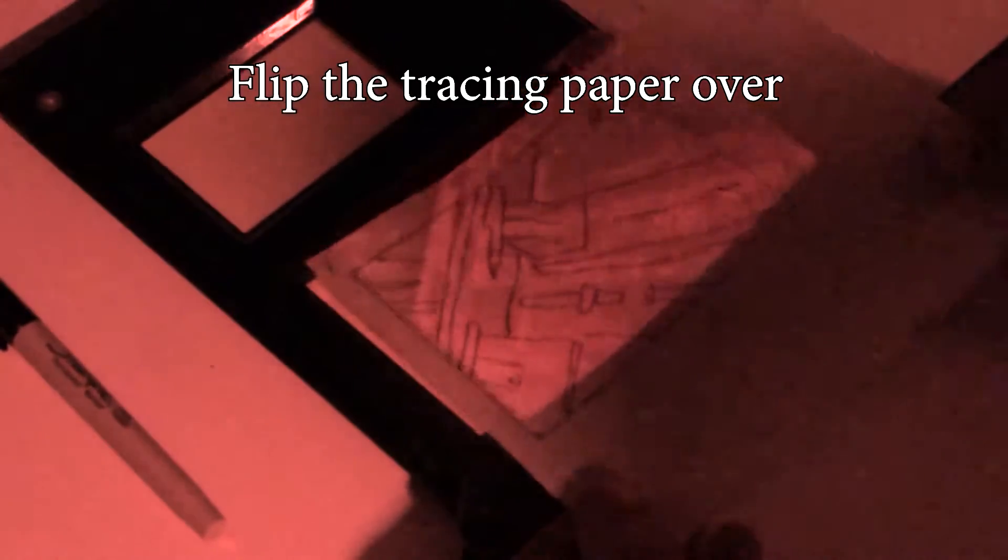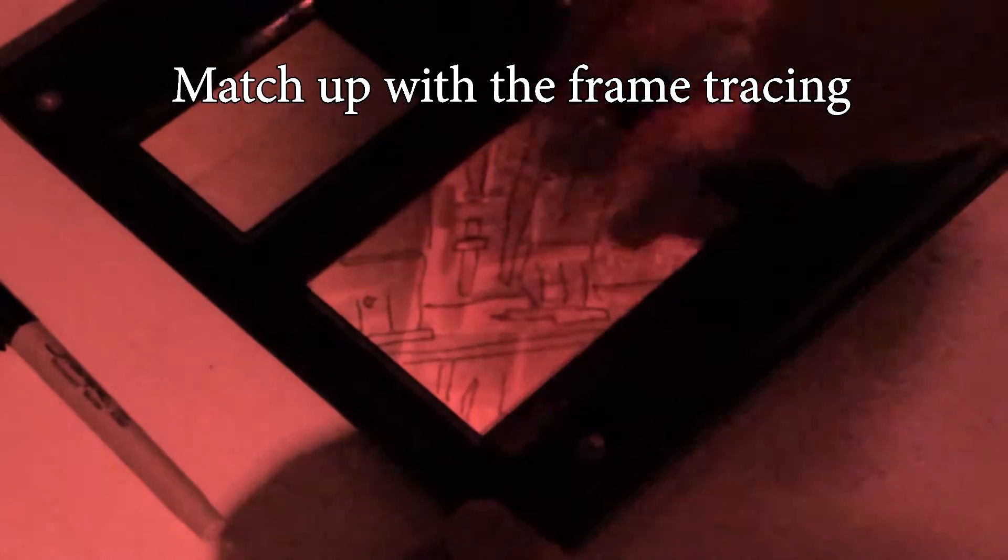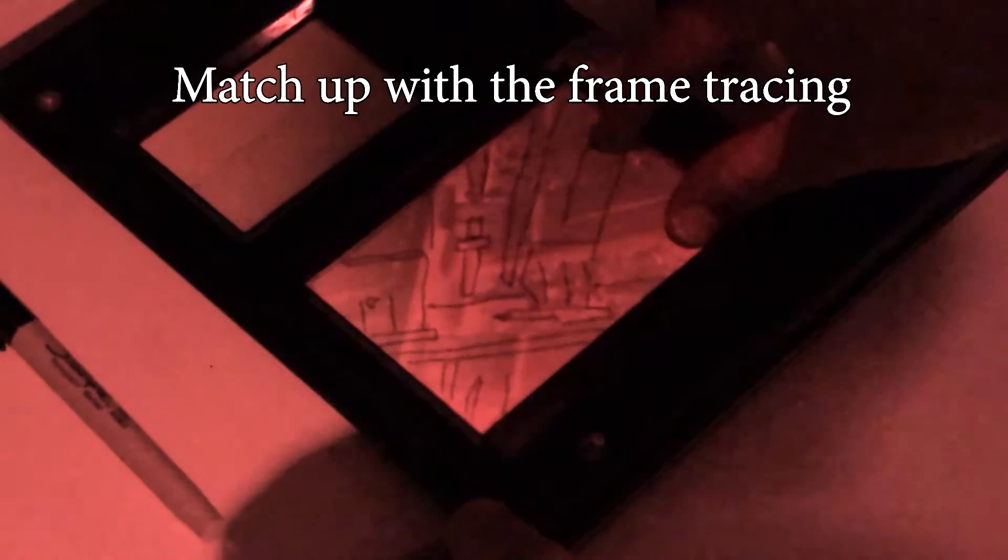And now remove the tracing paper and flip it over. Now put that baby back into the easel. Line up the frame that you traced with the frame of the easel. And once you've got that precisely lined up.